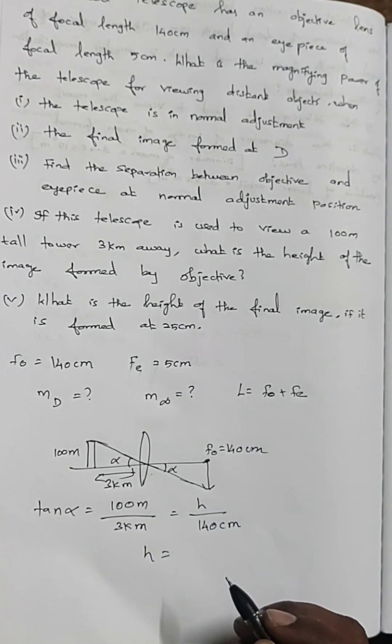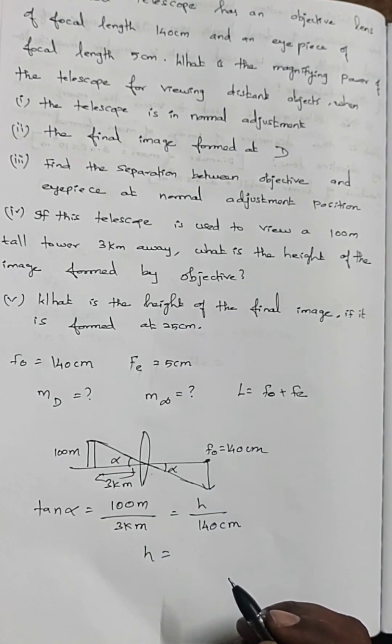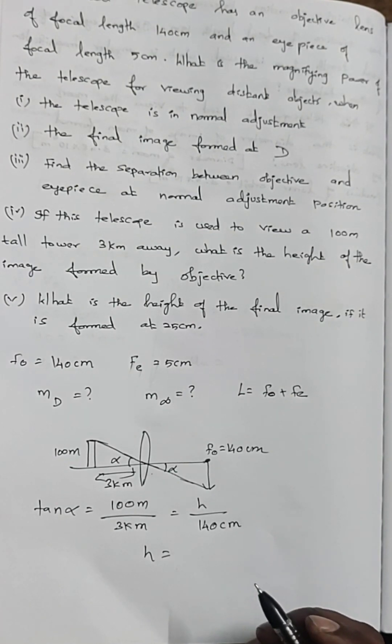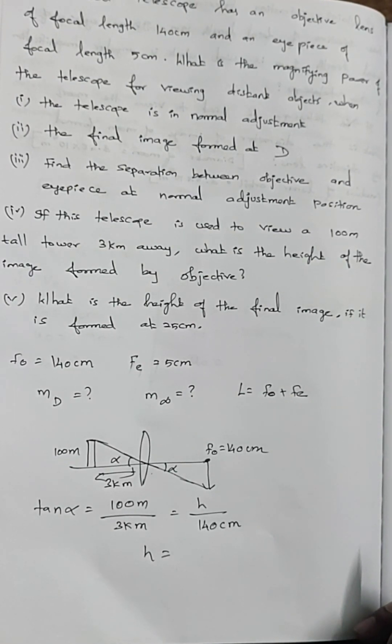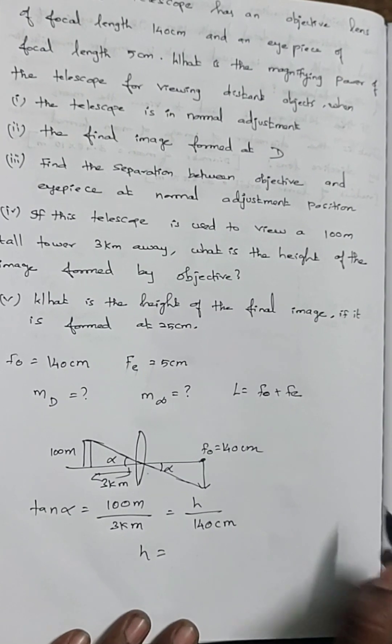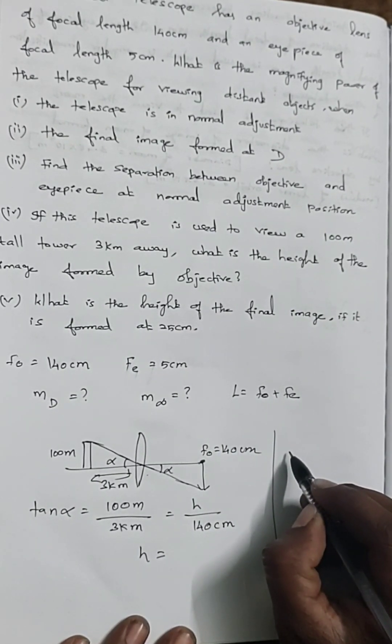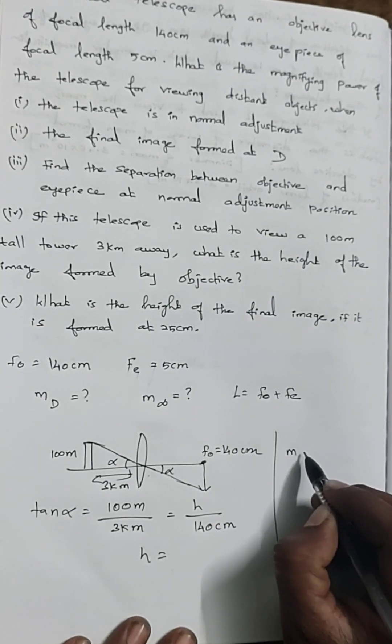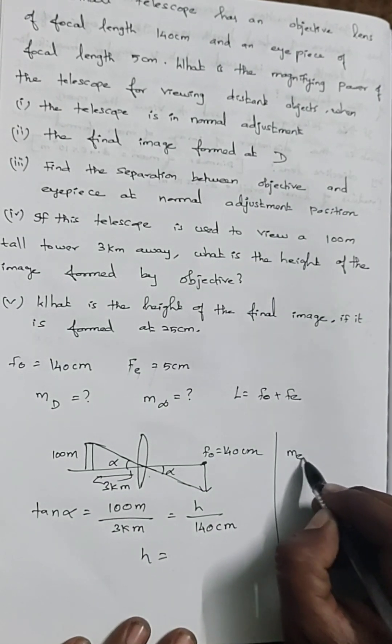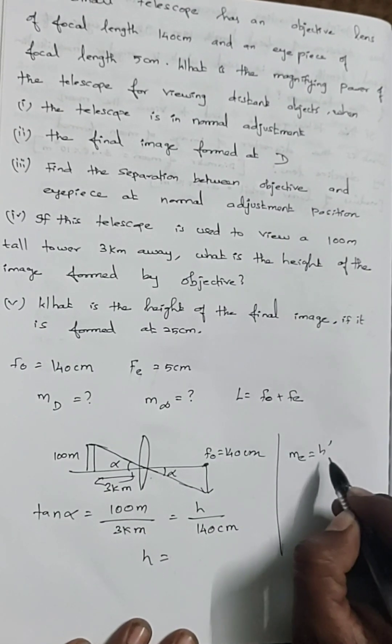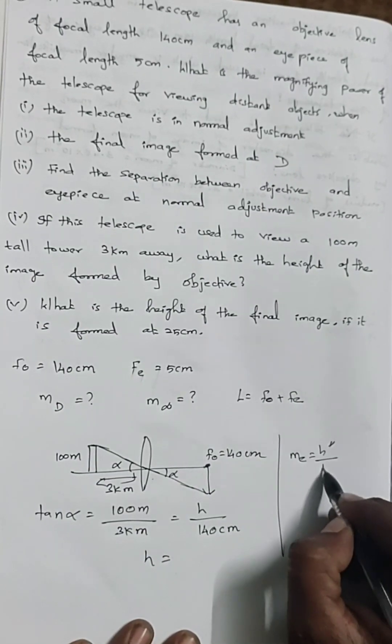What is the height of the final image if it is formed at 25 centimeter? We need to find final image height. For finding final image height, m_e equals h dash divided by h double dash.